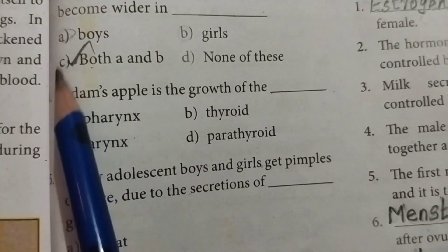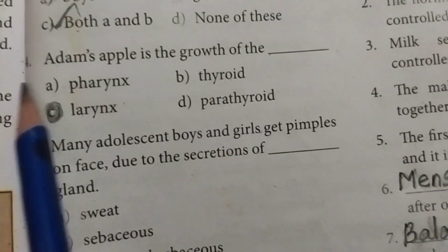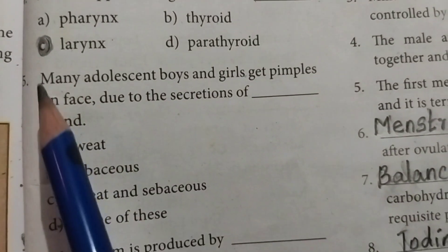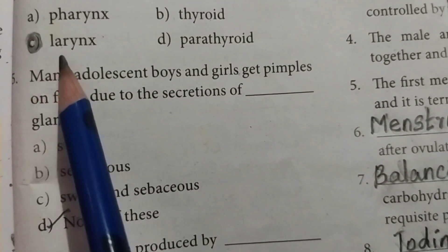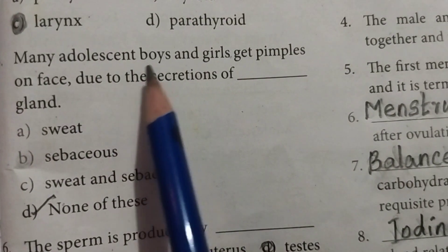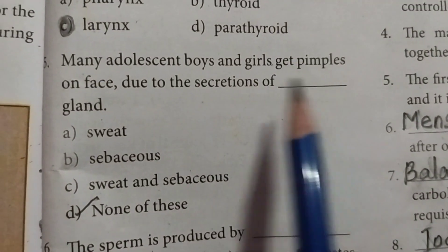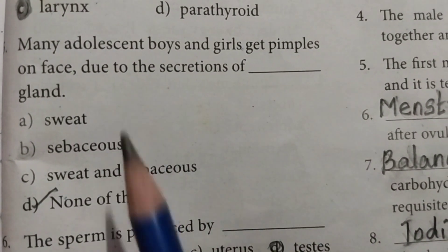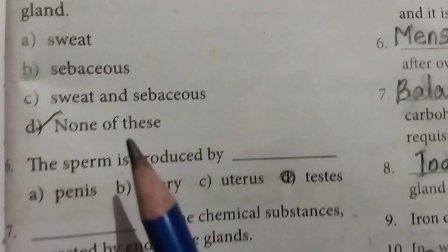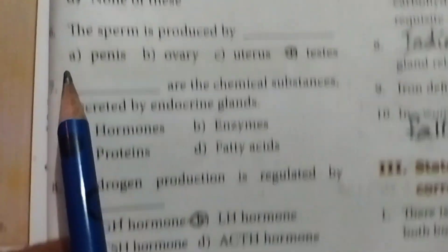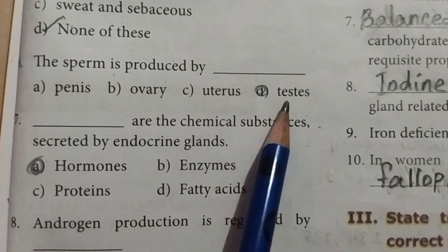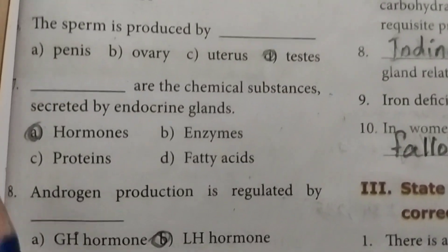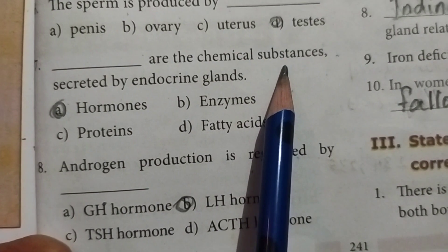Question 3: Option C is the answer. Question 4: Adam's apple is the growth of the blank. Option C: Larynx. Question 5: Many adolescent boys and girls get pimples on their face due to the secretions of blank glands. Answer: None of these.